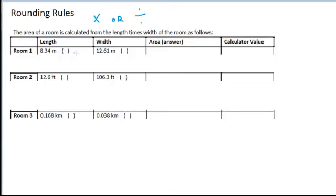As an example, the area of the room is calculated from the length times the width. So if I'm told the length and the width of my room, I can punch those numbers into my calculator and my calculator will display the answer, the area of the room. If I punch these numbers in the calculator, it will display 105.1674 as the answer.